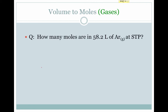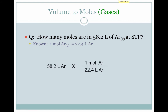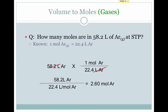We can also go the other direction. Suppose I have 58.2 liters of argon at STP and I want to know how many moles it contains. I know that one mole of argon gas equals 22.4 liters. So I write my given, multiply by my conversion factor, cancel my units, and I find that I have 2.60 moles of argon, which makes sense since I had more than 22.4 liters of argon to start with.